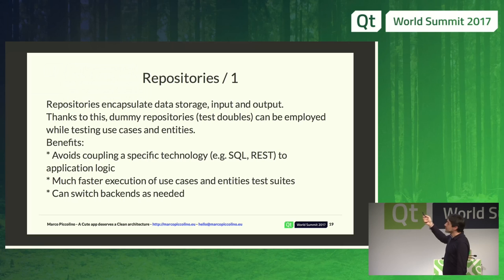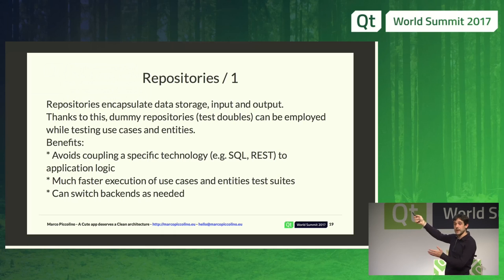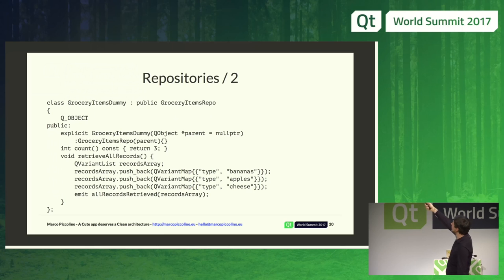Repositories encapsulate storage input and output, letting me encapsulate technology outside of my logic and use it only when needed. My test cases run faster because I don't need to access the database or web — I use mock components and can switch between them. For example, a dummy repository just returns some QVariantList records, creates demo records, and returns them to my entity for use in the application.